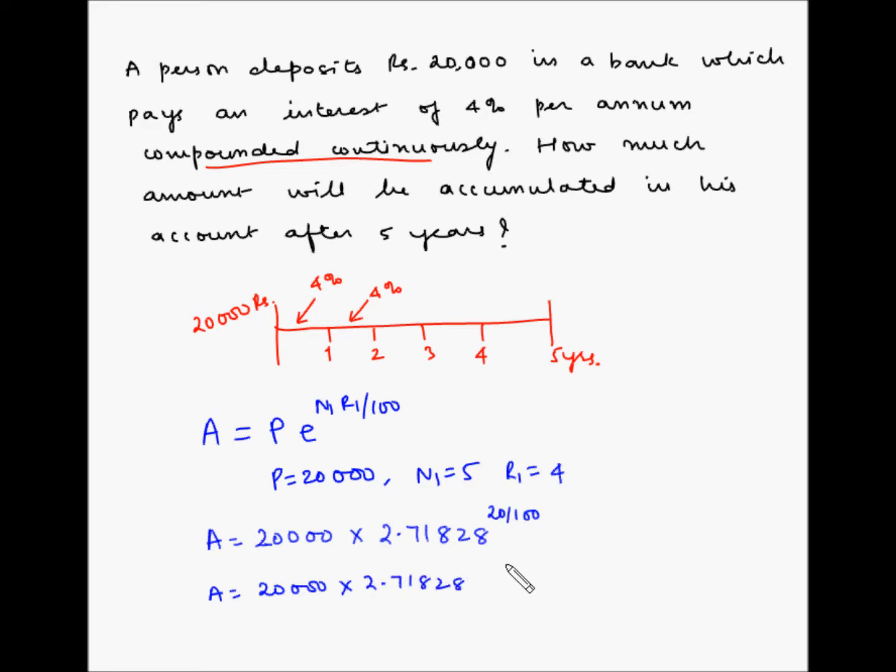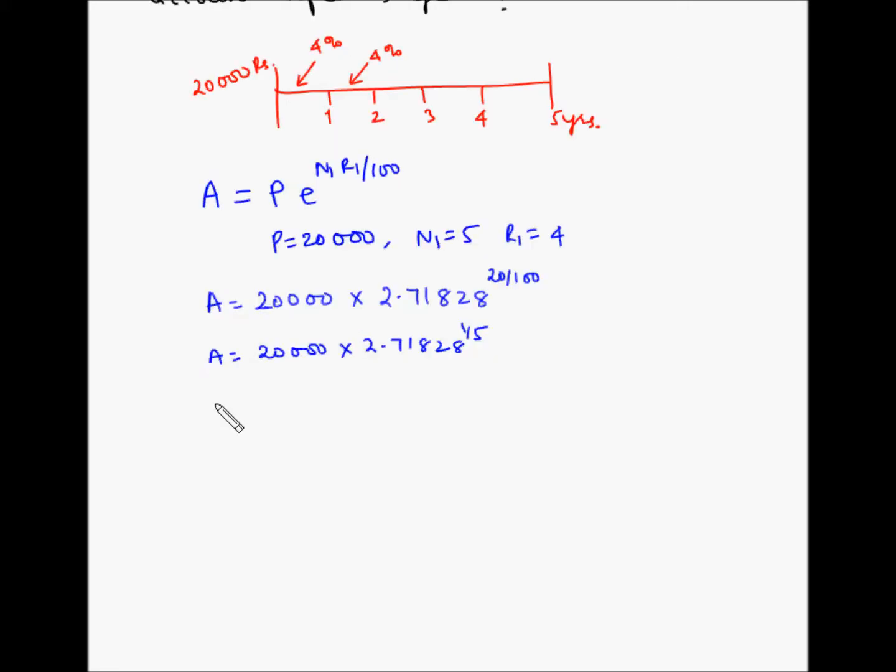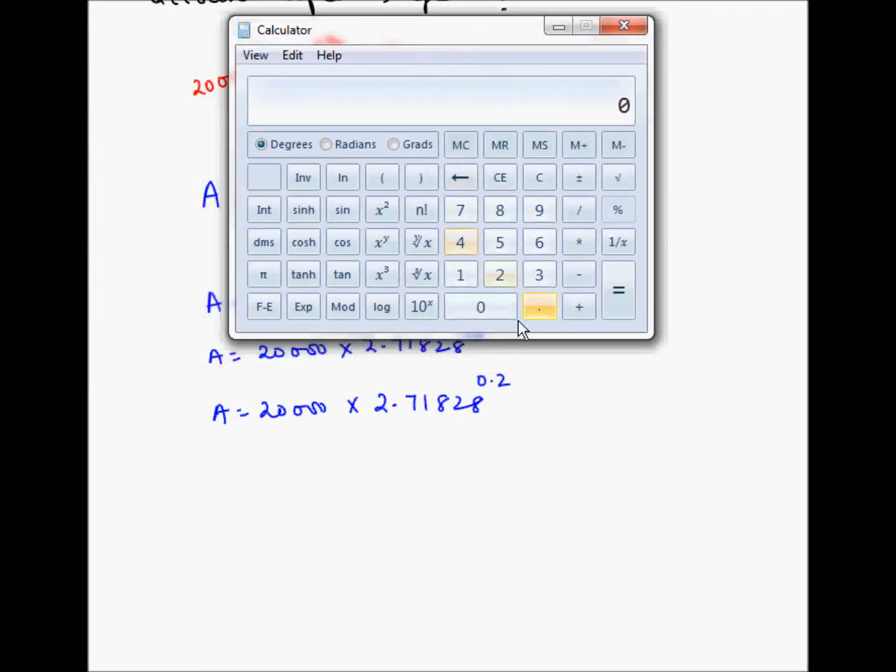So A is equal to 20,000 multiplied by 2.71828 to the power of 20 divided by 100, which is 1/5, or A is equal to 20,000 multiplied by 2.71828 to the power of 1/5, and 1/5 is also 0.2. So let me pull my calculator here. So 2.71828 to the power of 0.2 multiplied by 20,000.